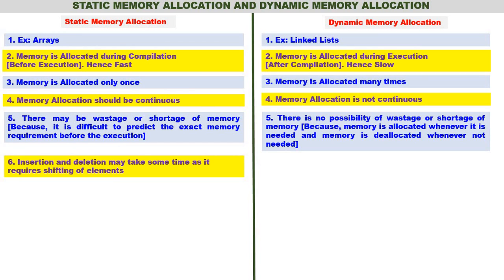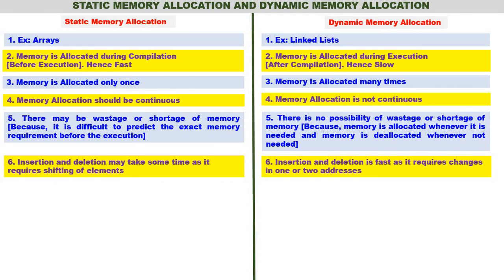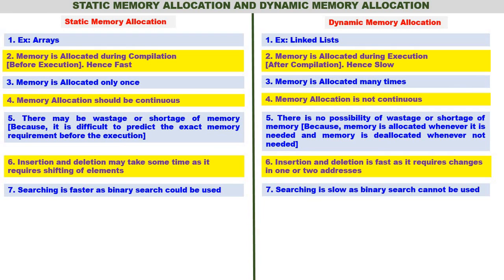In static memory allocation, insertion and deletion may take some time as it requires shifting of elements. In dynamic memory allocation, insertion and deletion are fast as they only require changes in one or two addresses. For searching, static memory allocation is fast because binary search can be applied, whereas dynamic memory allocation requires linear search, so searching is slow.